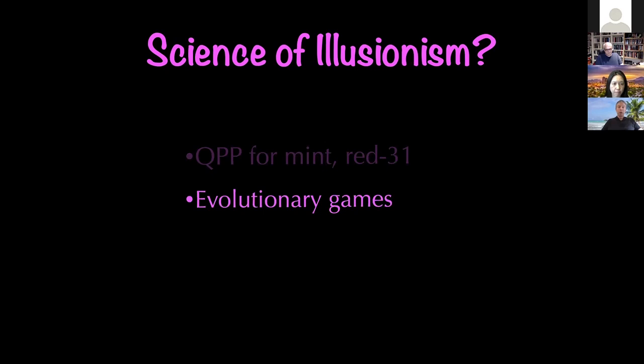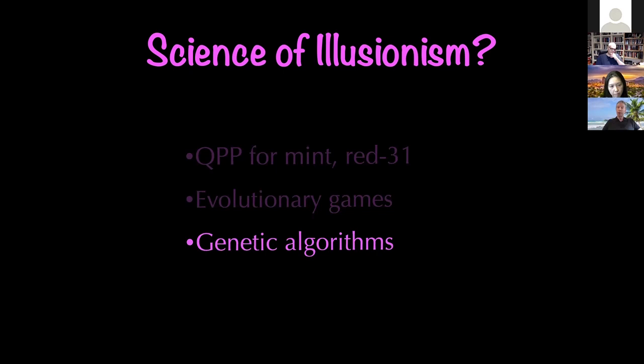To do this, we could use evolutionary game theory and run simulations, or use genetic algorithms to show how these illusions could arise. We could also try to prove theorems — evolution by natural selection is mathematically precise. The road ahead for illusionism, I think, is to turn it into a precise science. I would love to discuss how that might go.